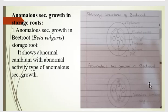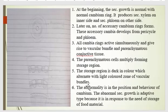After anomalous secondary growth in beetroot, a vascular cambium ring develops over both xylem. Secondary xylem is developed on this vascular cambium ring toward the center, and secondary phloem develops on the other side of the cambium ring.